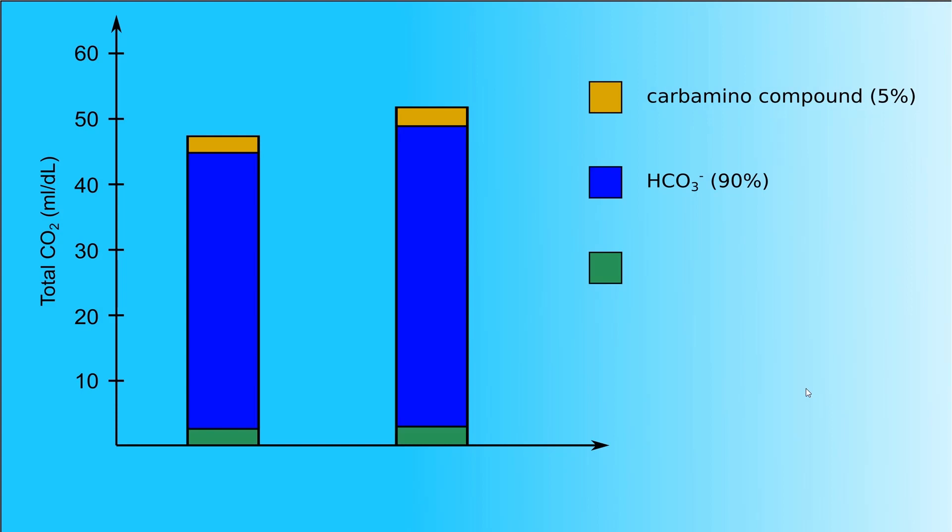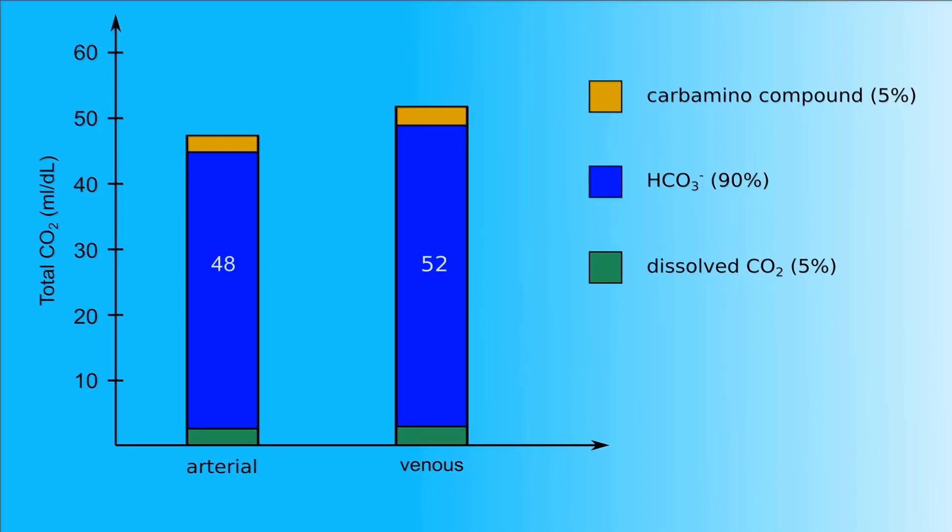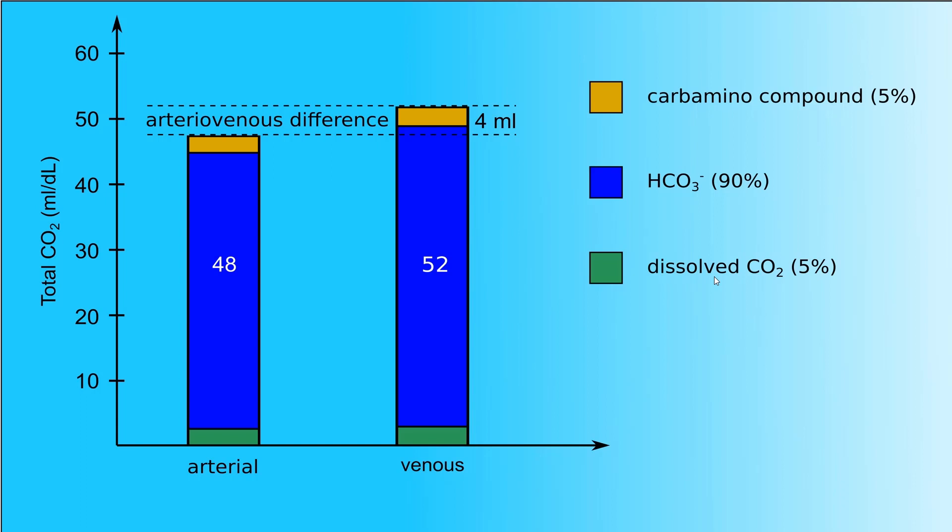The largest portion, ninety percent, is carried as bicarbonate ions. Finally, five percent of CO2 is transported in the dissolved state. The left bar represents CO2 in arterial blood and the right one in venous blood. Each deciliter of arterial blood contains 48 milliliters of carbon dioxide, and each deciliter of venous blood contains 52 milliliters.